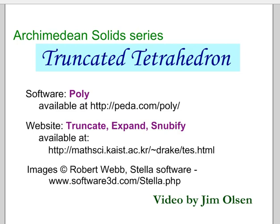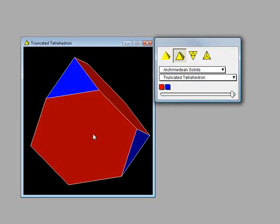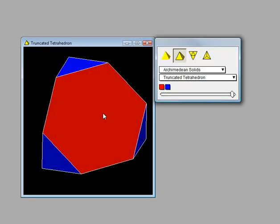In this series I'm going to be showing how each of the 13 Archimedean solids are derived from the platonic solids. Here is the truncated tetrahedron.